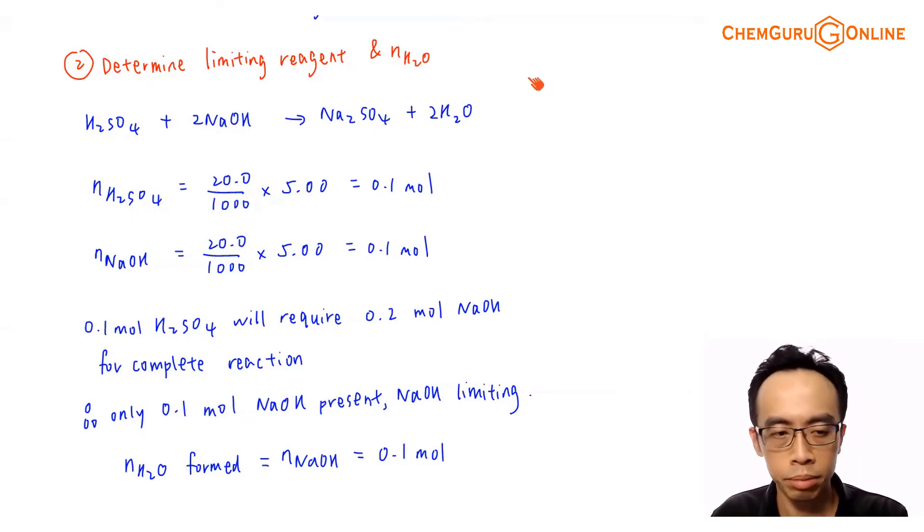Balance equation is here. Very simple. H2SO4 plus 2 sodium hydroxide to give me sodium sulfate and 2 moles of water. So number of mole of acid is concentration times volume. So 20.0 divided by 1000 multiplied by concentration 5.00. The number of mole of sulfuric acid is 0.1 mole. And since the concentration and volume for sodium hydroxide is exactly the same, number of mole of sodium hydroxide will also be 0.1 mole.